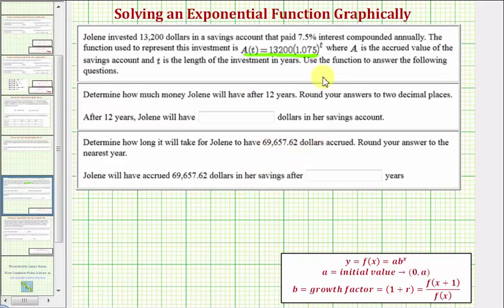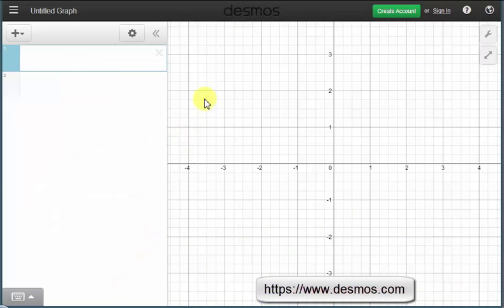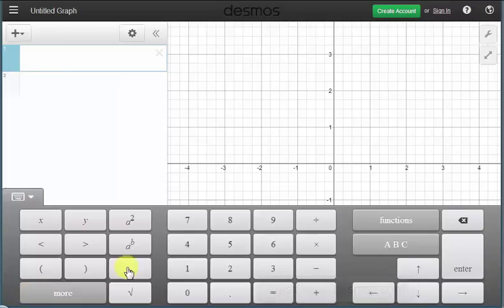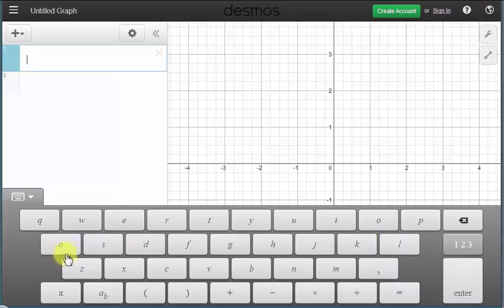Our first step will be to go to Desmos.com and enter our function A(t). Using Desmos, we can use A and we can use T. You can use the keyboard, I'm going to use the on-screen keyboard and we're going to enter A(t). So we'll press this button for our letters. So we have A, open parenthesis, T, close parenthesis, equals. Now we'll go back to the number keypad, so I'll press this button here.